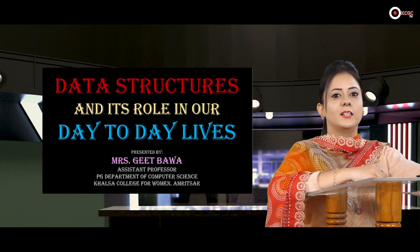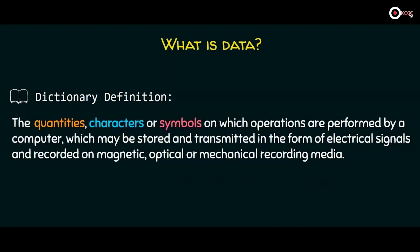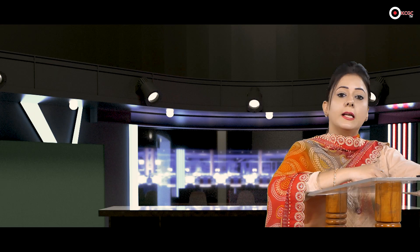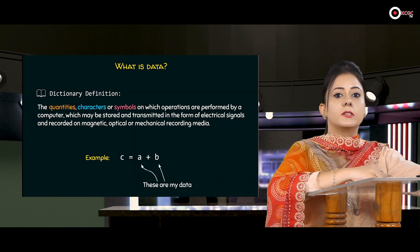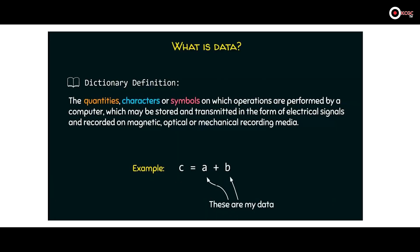Now let's begin our presentation on Data Structure and its role in our day-to-day lives. Let me start with the definition of data. According to the dictionary, data is quantities, characters, or symbols on which operations are performed by computers, which may be stored and transmitted in the form of electrical signals and recorded on magnetic, optical, and mechanical recording media. So any symbol or character can be considered as data. For example, in the equation C equals A plus B, A and B are my data because they store quantities, can be used to perform operations, can be processed, and can be stored in electronic media.